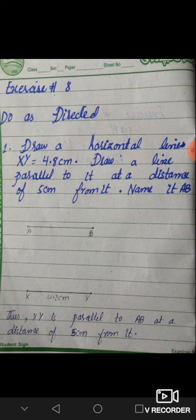We have AB drawn. XY is given as 4.8 cm, but in parallel we have drawn a 5 cm line and named it AB.